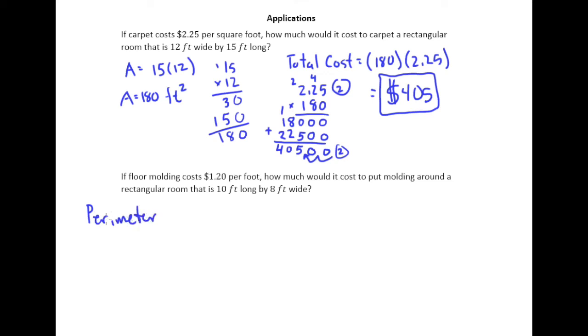And remember, perimeter can be found by taking 2 times the length plus 2 times the width. So for us, that's going to be 2 times 10 plus 2 times 8. Of course, 2 times 10 is 20, 2 times 8 is 16. And so our perimeter is 36 feet.